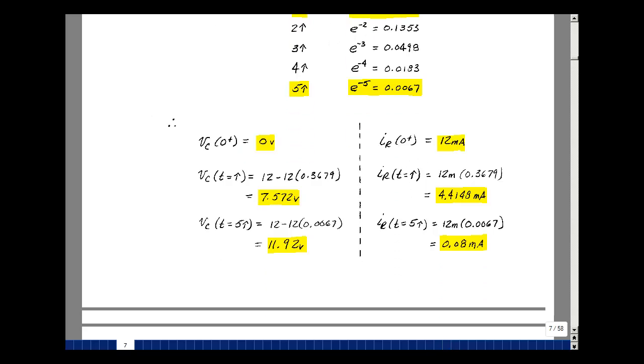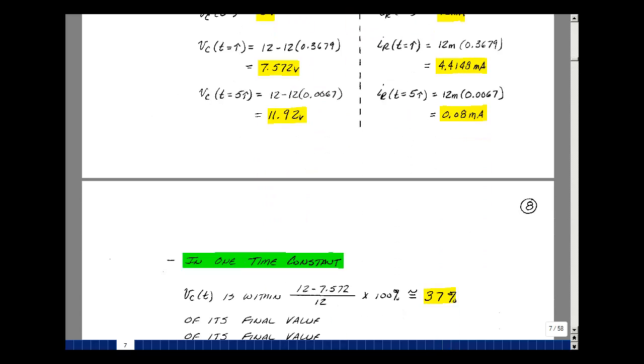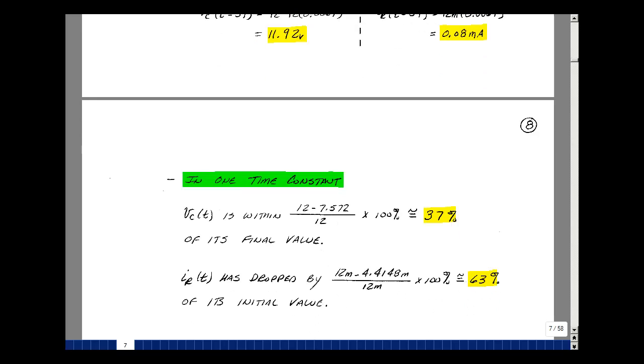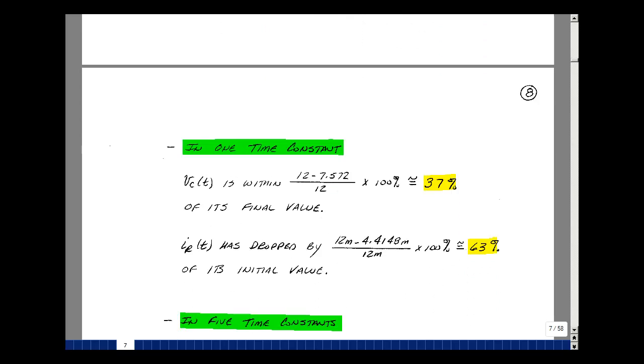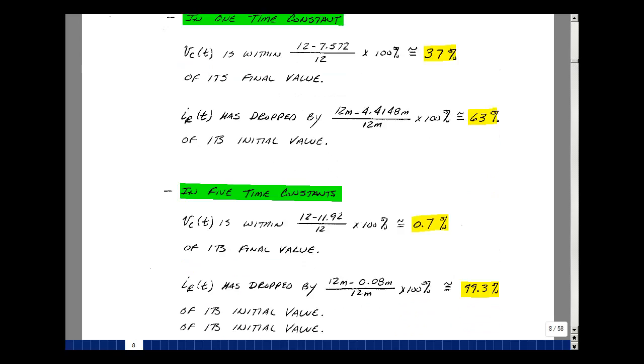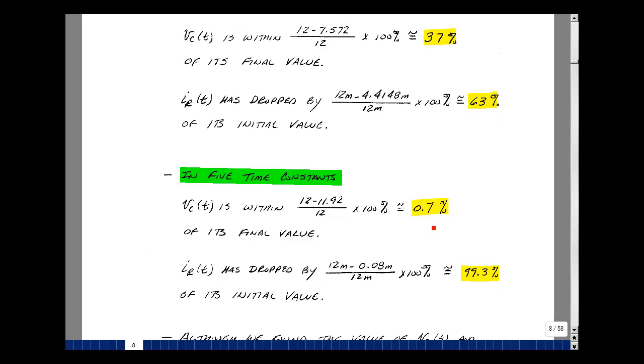We do this as a percentage. So in one time constant, I've gone from 0 volts to 7.572, and I'm within 37% of where I'm heading to. The current in the resistance started out at 12 milliamps up to 4.4, and that's a percentage change of 63%. Now in five time constants, we're within 0.7% of 12 volts, and we've dropped 99.3% in five time constants for the current.